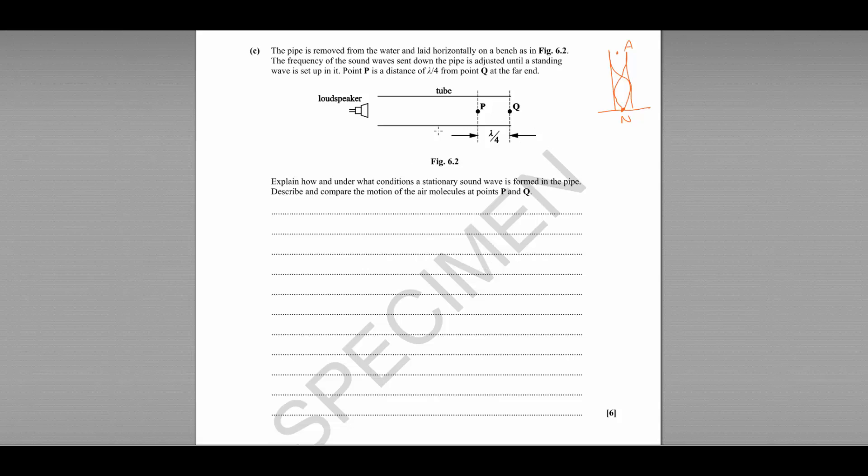When we have a column of air that is open at both ends, you have an anti-node at both ends. So you get a pattern more like this.